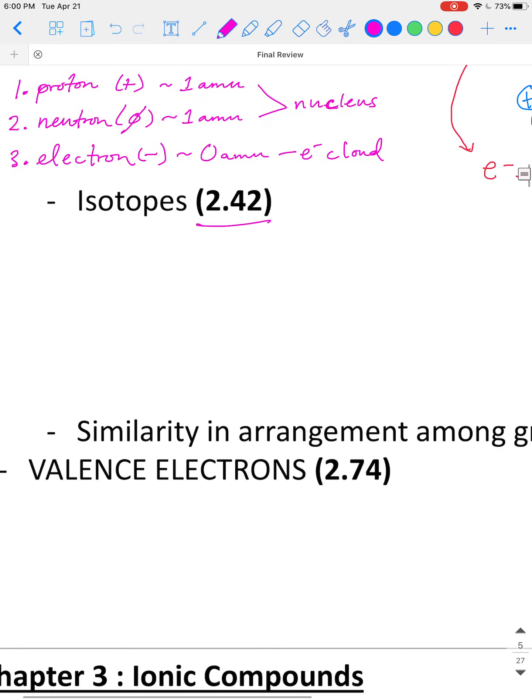So that brings us to isotopes, which is the next thing from Chapter 2. It's a great problem here, 2.42 to work regarding isotopes. First of all, remind yourself what an isotope is. It is an element with varying number of neutrons. This is the simplest way I can put it.